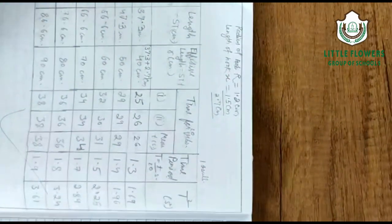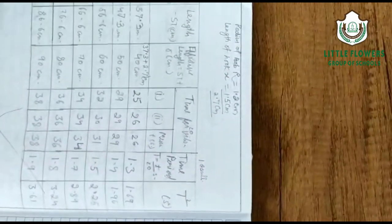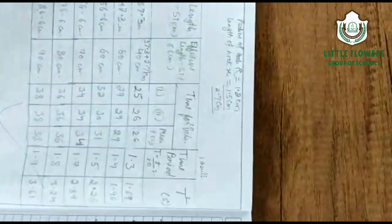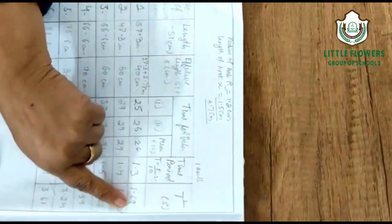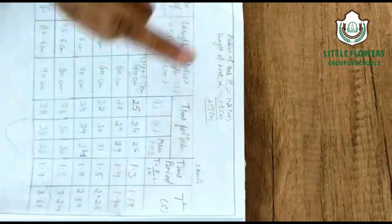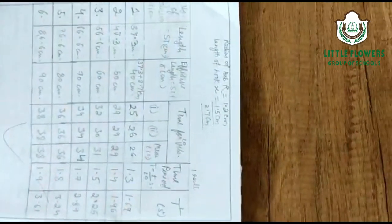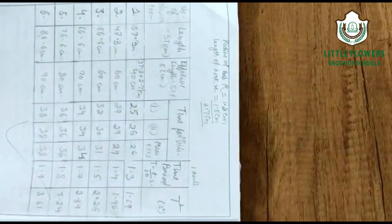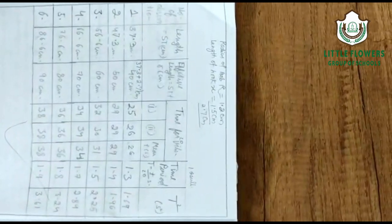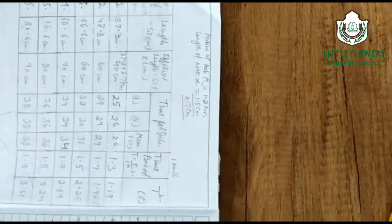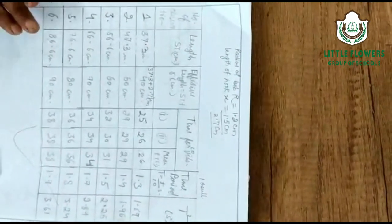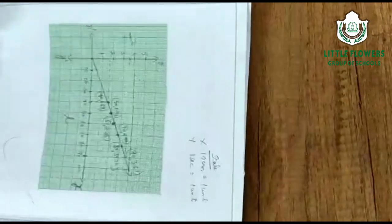Dividing the mean time by 20, we get T = 1.3 seconds for one oscillation at an effective length of 40 cm. The square of this, T², is 1.69. Follow the same pattern for different lengths: 47.3 cm, 57.3 cm, and so on. We should take 7 or 8 readings to plot a stable graph.